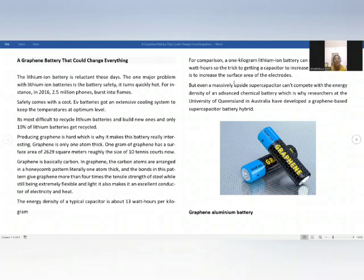Graphene is basically carbon. In graphene, the carbon atoms are arranged in a honeycomb pattern, literally one atom thick. And the bonds in the pattern give graphene more than four times the tensile strength of steel, while being extremely flexible and light.